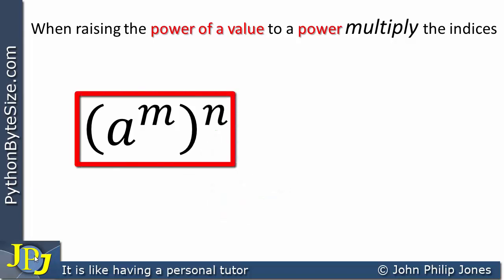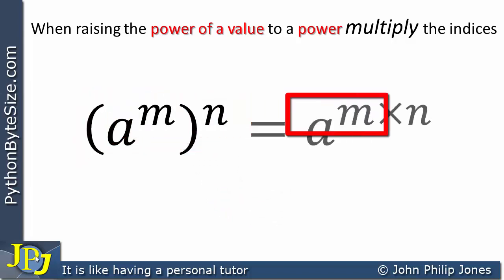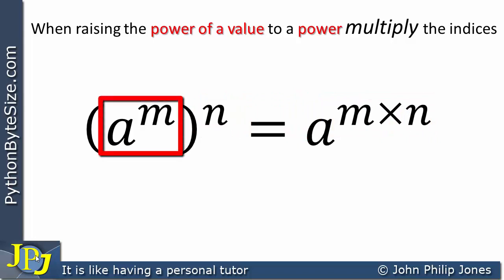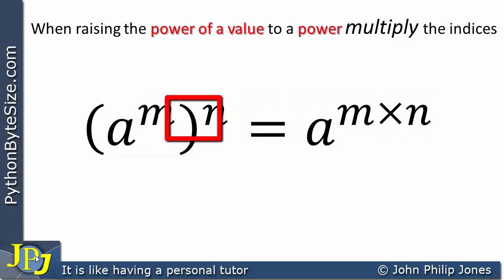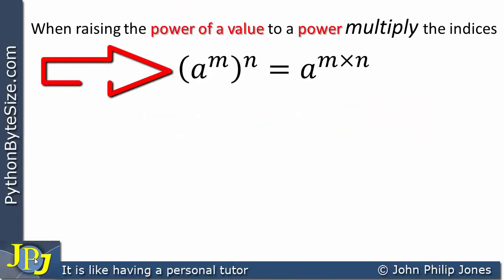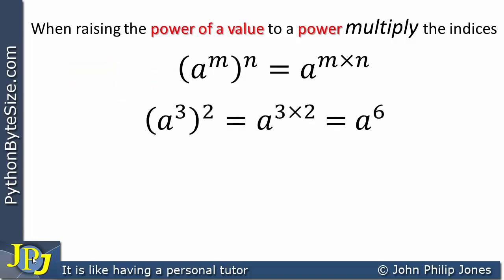For this, what we do is multiply together the indices as shown here. So if you have a number raised to a power that you then raise to another power, you multiply the indices. Here we can see the law expressed, so let's now look at this with a more concrete example.